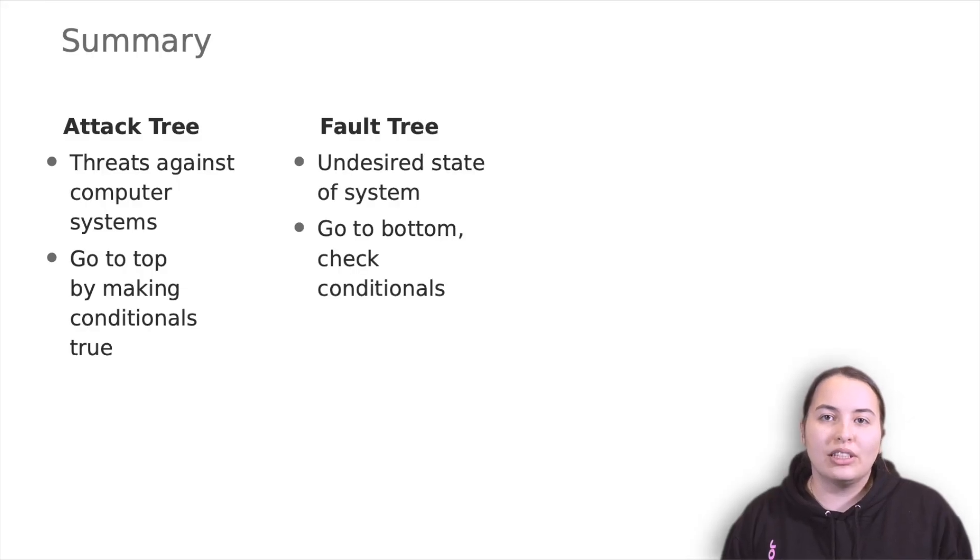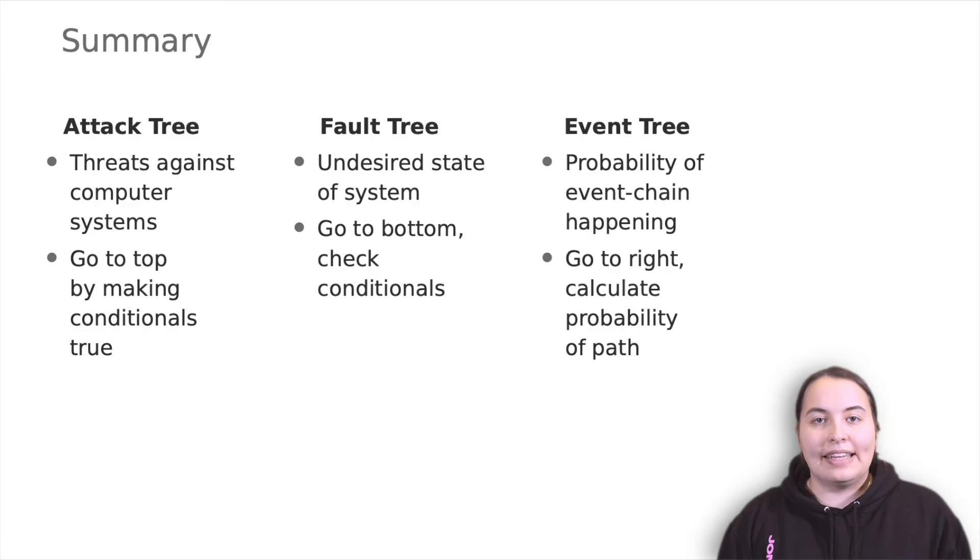Fault trees deductively model the combination of system failures and human errors that could lead to an accident. We move from the root to the bottom by checking the conditionals. Its main purpose is to analyze failures and cannot be applied to every step of the design process.